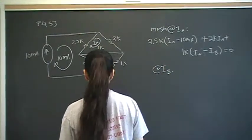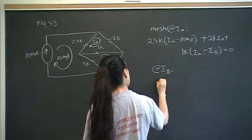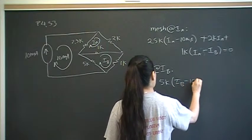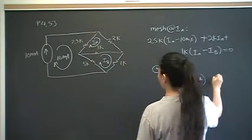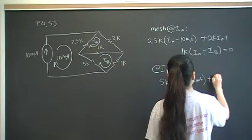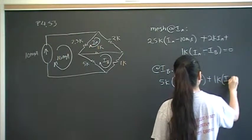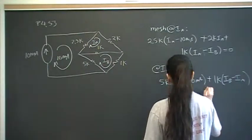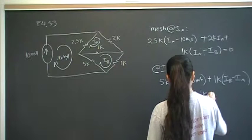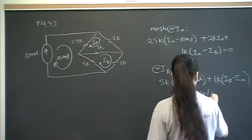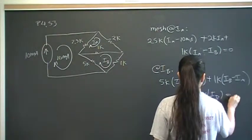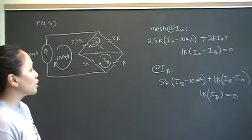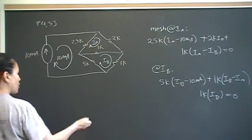Mesh at Ib: we've got the first voltage drop across the 5k resistor — that's 5k times (Ib minus 10 milliamps). The next voltage drop across the 5k resistor — that's 5k times Ia. And the final voltage drop is across the other 1k resistor — that's 5k times Ib. That's equal to zero.